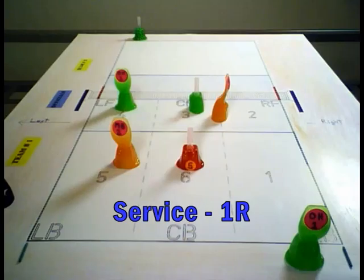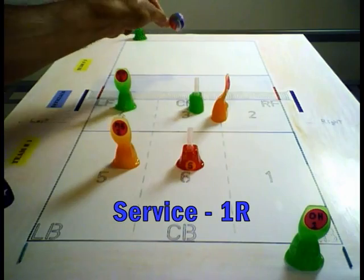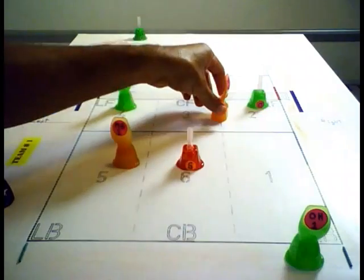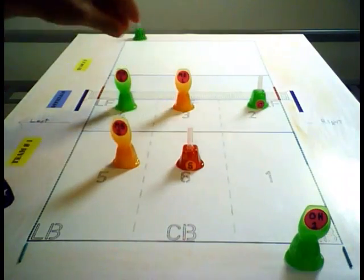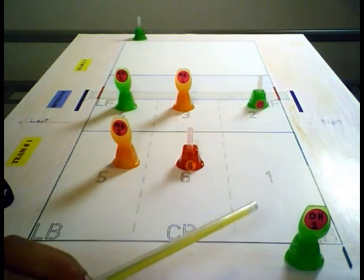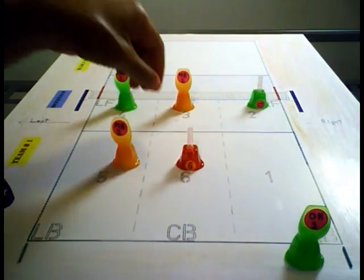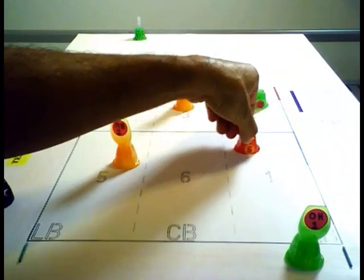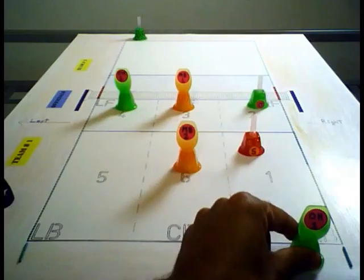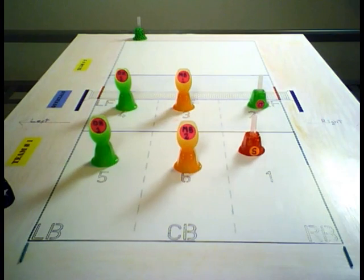Service: the outside hitter serves the ball across. Opposite goes to the right, middle blocker comes to the middle, and the outside hitter who just served has the longest traveling distance — coming all the way across. The setter goes to the setter's defense zone, middle blocker comes to the middle, outside hitter comes all the way to the left. Now they're ready to play defense.